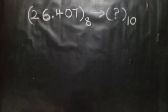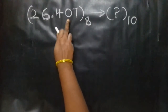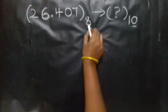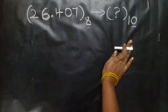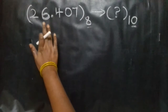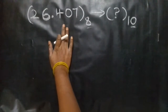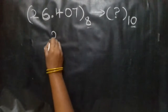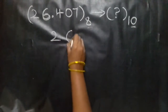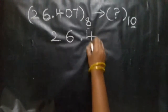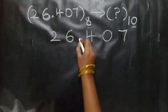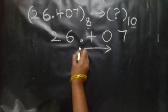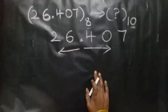Let us take a look at an example. The number is 26.407 in octal — convert it to decimal, which is the base 10 system. To the right of the decimal point is the fractional part, and to the left is the integer part.